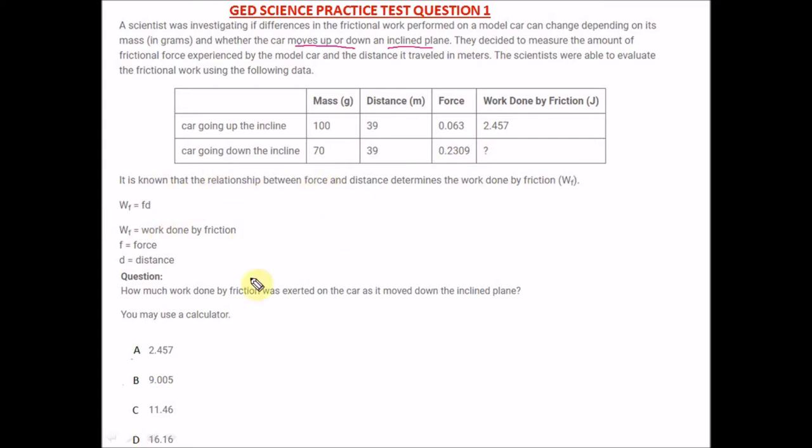Let's quickly go down here and see what the question is asking. It says it is known that the relationship between force and distance determines the work done by friction. The formula of work done by friction is W = fd, that's force times distance. In your GED you need not bother about cramming any formulas; whichever question you're given, the formula will be given in the question, so there's really no memorization in the test.